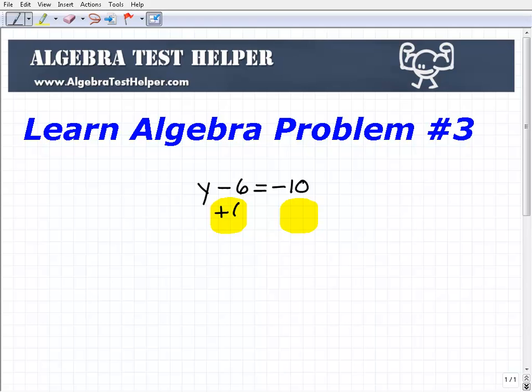So I'm going to put a plus 6 here. Notice how I'm adding plus 6 to both sides of the equation. I'm doing it right underneath these numbers.